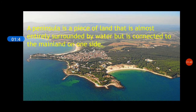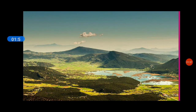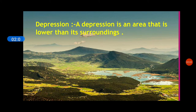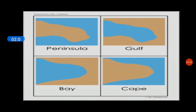A peninsula is a piece of land that is almost entirely surrounded by water but is connected to the mainland on one side. A depression is an area that is lower than its surroundings. Peninsula, gulf, bay, and cape are shown in the outline pictures.